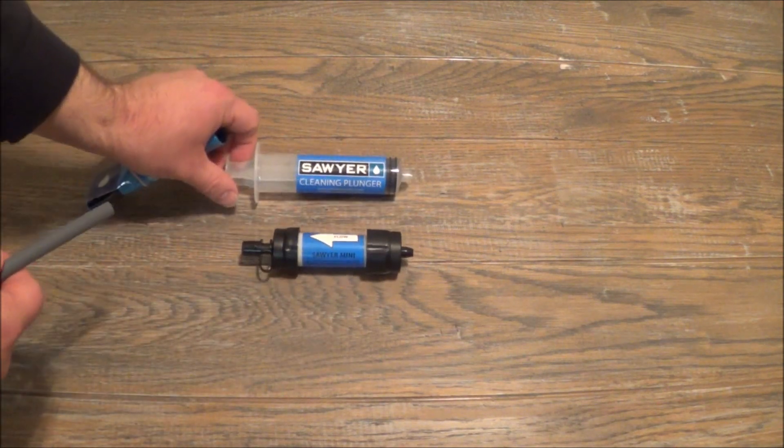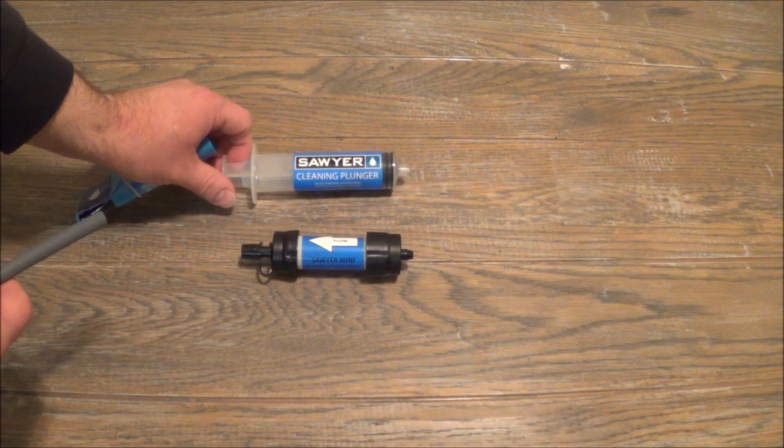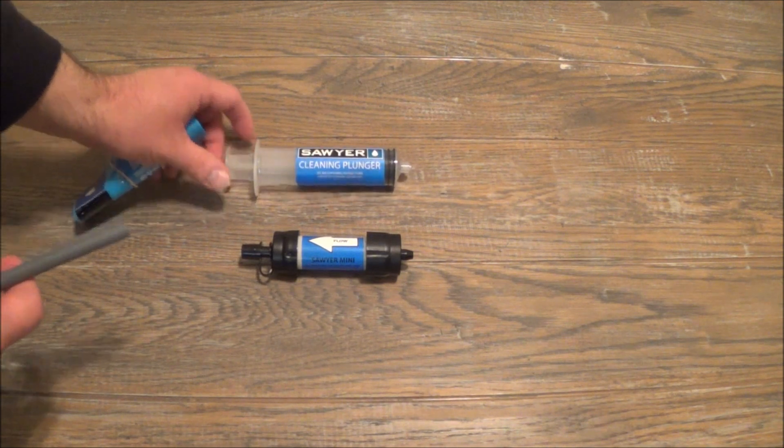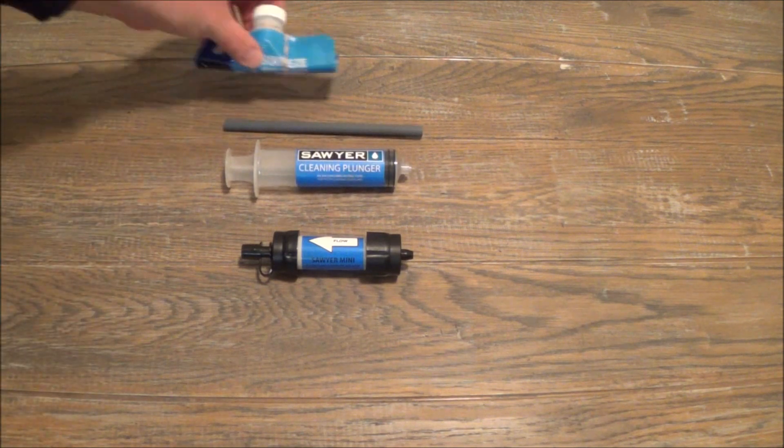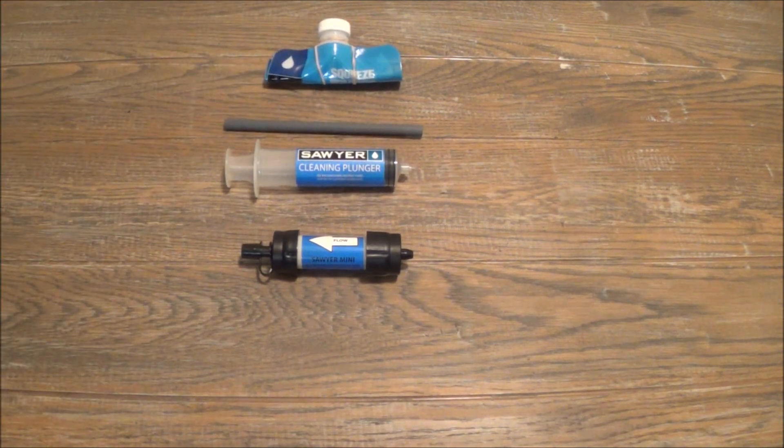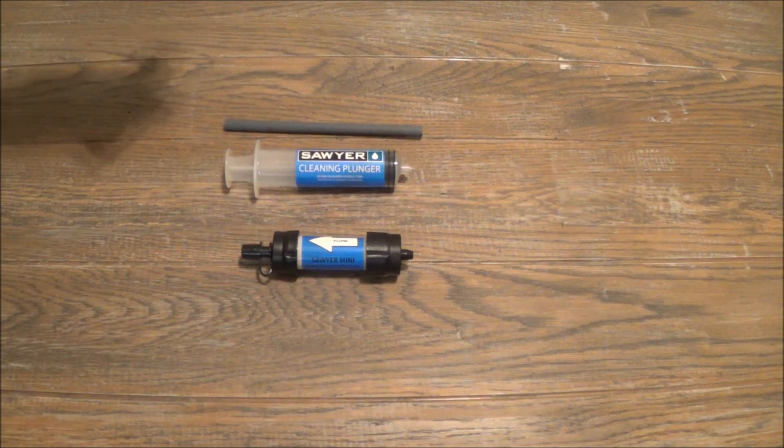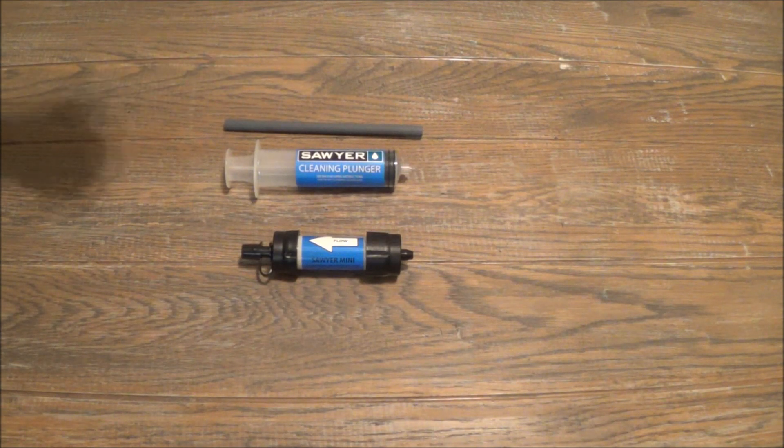When you buy the kit, it comes with the filter, a cleaning plunger where you backwash clean water through the filter to clean out debris, a sipping straw, and then a small bag. In the mini, it comes with their smallest bag, I think it's 16 ounces or 12.